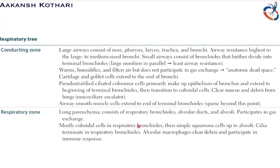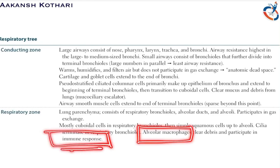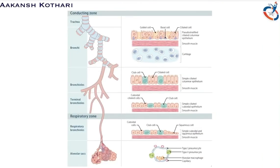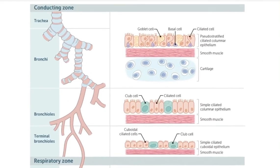The cilia terminate in the respiratory bronchioles. An important cell type present here is the alveolar macrophages, which clear debris and participate in the immune response. Now let's look at an important diagram to make this clearer.